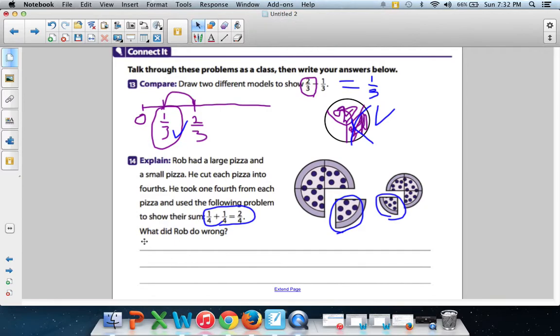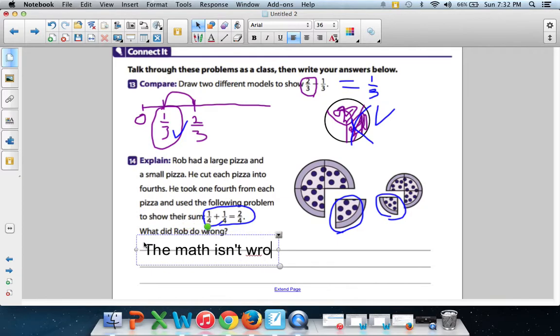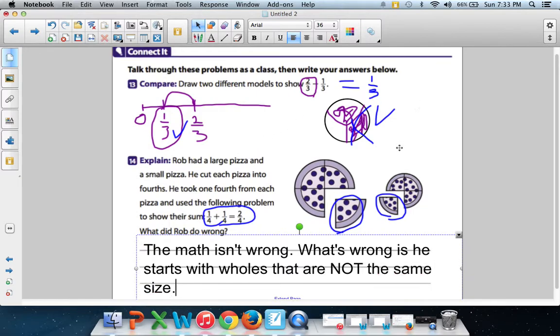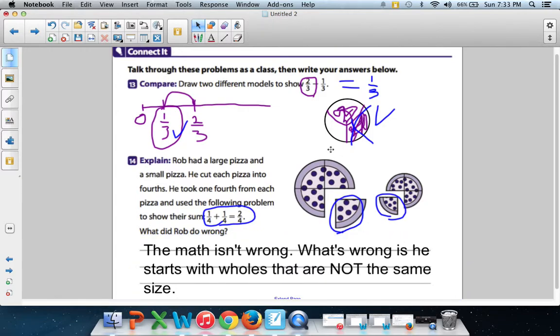What is wrong? Well, look at the size of those pizzas - they're not the same. The wholes, they're different size wholes. What's wrong is he starts with wholes that are not the same size. So when you're adding fractions, this problem just proved to you that you have to have wholes (W-H-O-L-E-S) that are the same size.